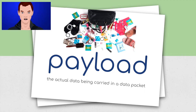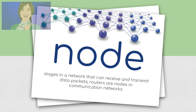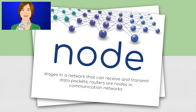Payload: the actual data being carried in a data packet. Node: stages in a network that can receive and transmit data packets, such as routers and nodes in communication networks.